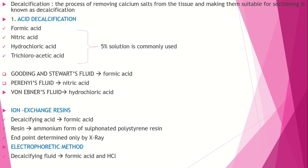Decalcification means removing calcium salts from tissues like bone and teeth that have high calcium content, so that they can be easily sectioned. Calcium salts are removed — we call it decalcification — so that it will be easy for sectioning. The most common method is acid decalcification, using a 5–10% solution.